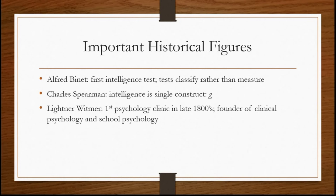I wanted to go over a few important historical figures — there are more in the book, but I'll touch on the most important ones. The first person who seems to have put together a psychological test is Alfred Binet, who worked in the Paris school system in France in the late 1800s and early 1900s. He came up with one of the very first intelligence tests and also the idea that tests classify rather than measure — the point being that a lot of the concepts we're trying to measure are very hard to quantify, so a lot of times what we're trying to do is put people into a category.